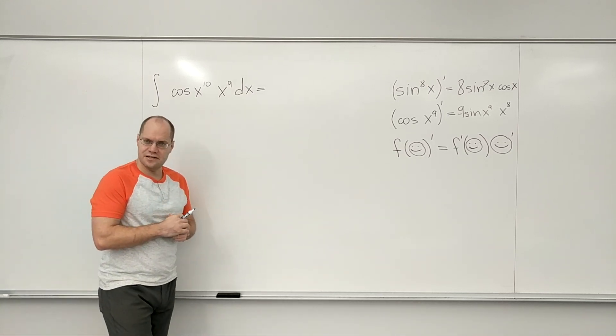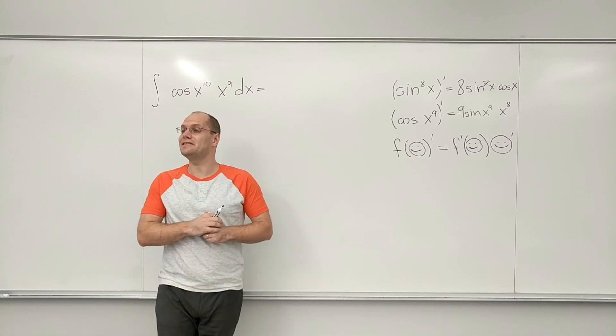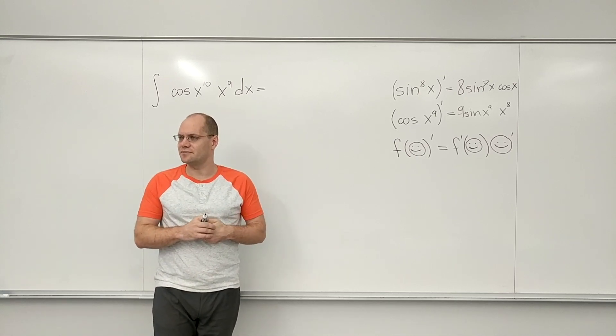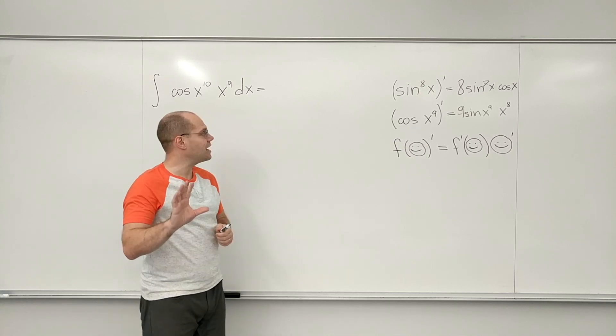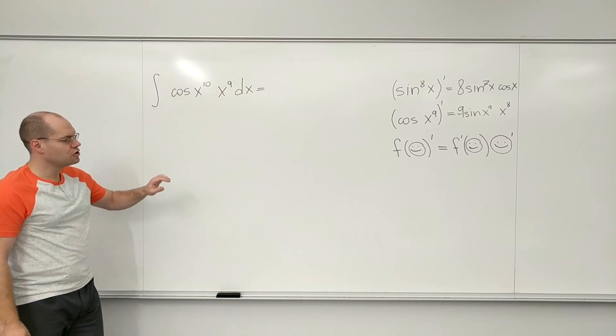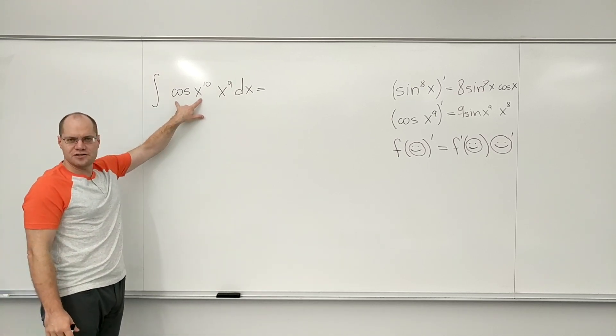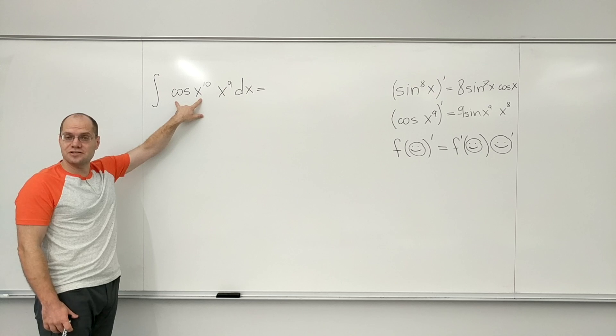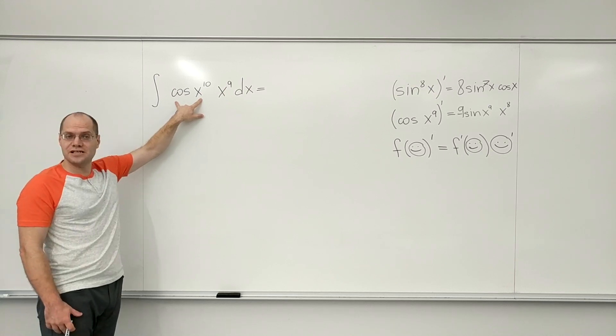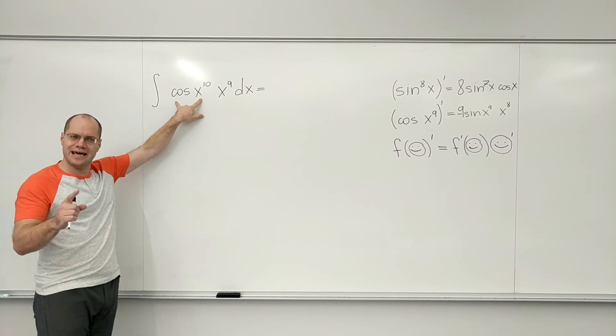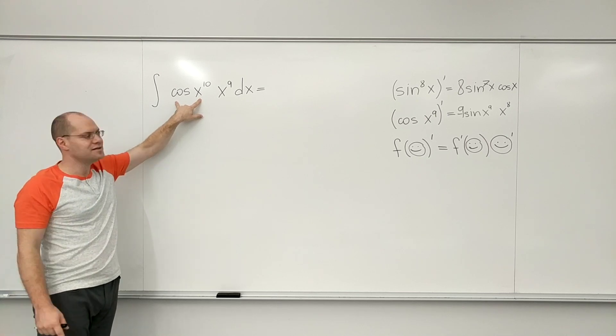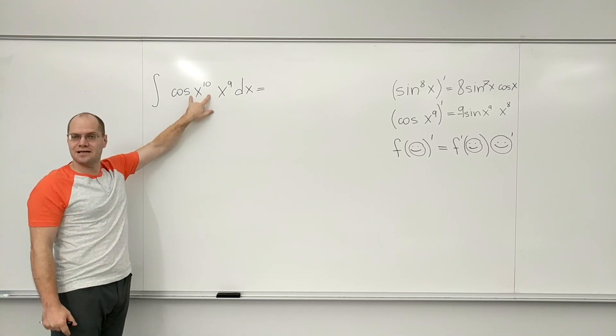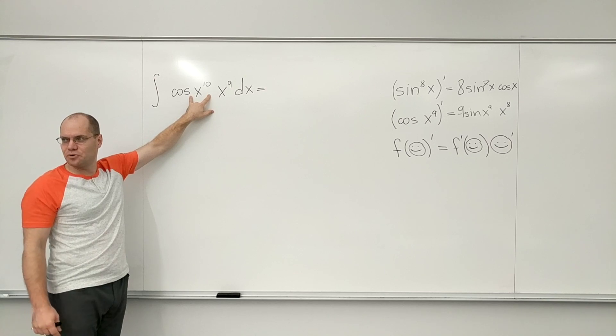And for integrals like this, you should absolutely not write anything down except the answer. And here's how your brain should work. You should maybe look at this first and say to yourself, I'm looking at cosine of something. So once again, you just name what you see with one word. The fact that it's cosine of something complicated is irrelevant at this point.